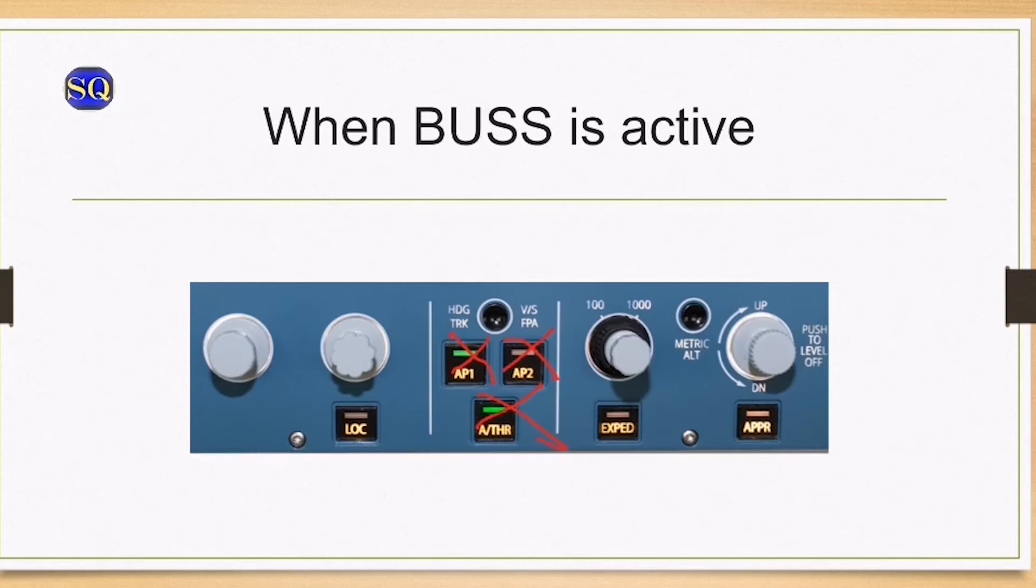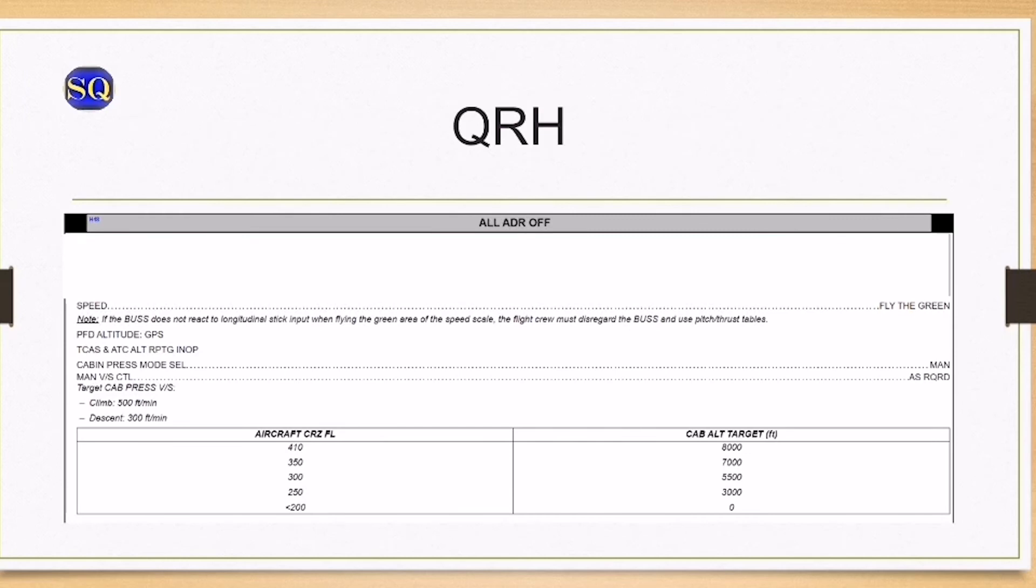When the BUSS is active, the autopilot and FDs and autothrust are inoperative. However, the stall warning remains operating. The flight is in alternate law, so your high angle of attack protection and VMO and MMO warning are lost, and you will go into direct law when the gear is down.